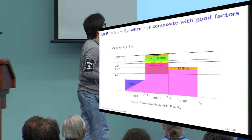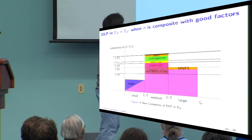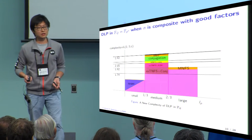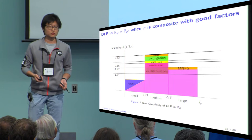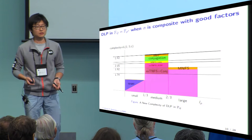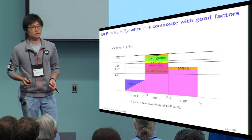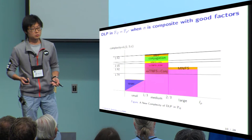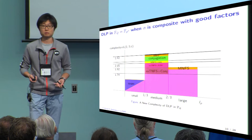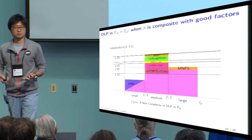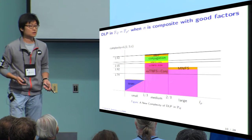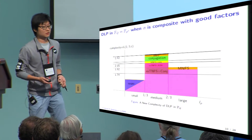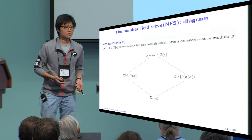If we further apply our EXTNFS with the conjugation method, then the complexity of DLP in the medium case becomes less than the complexity of the large characteristic case.